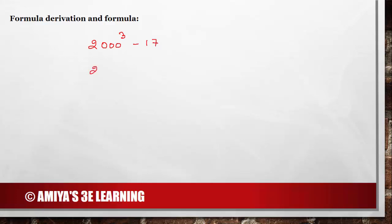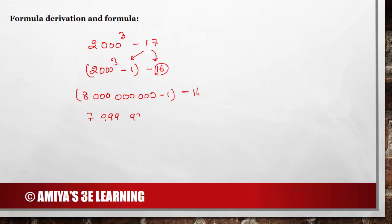Let's get the formula and its derivation. The question is 2000 raised to power 3 minus 17. What I am going to do is work on 2000 raised to power 3 minus 1, and then minus 16 — I am just decreasing 17 by 1 and giving 1 first. We can say this is nothing but 8000 and 1000 and 1000 and 1000 minus 1, minus 16. If we solve this, that is nothing but 7999 999 999 999 minus 16. The summation of digits of this number gives us the same answer.